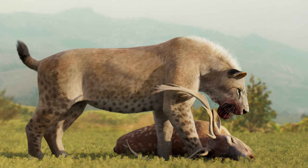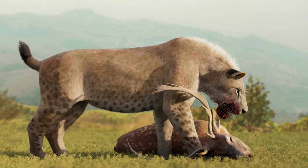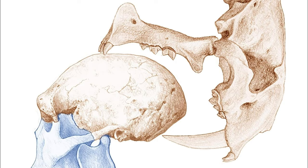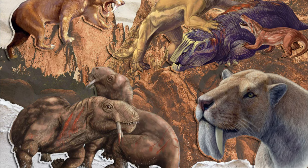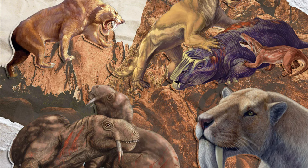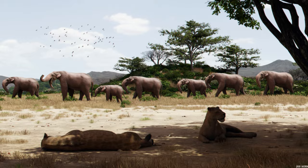Sabertooth cats are some of the most notorious animals of all time, famously battling our ancestors and being a large part of the image we have of the ice age. But saber teeth have actually evolved a number of times throughout the synapsid family tree. While sabertooth cats may be the most well known, the iconic canines first appear with the gorgonopsids.